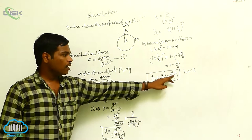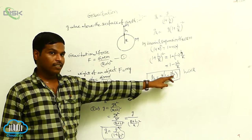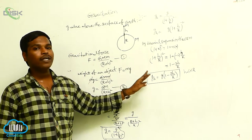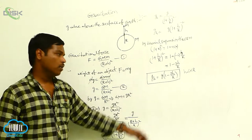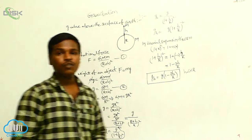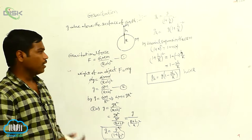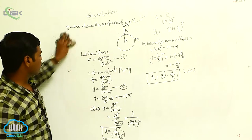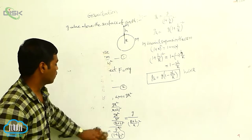As the height increases, the g value decreases. Now, how does this acceleration due to gravity change below the surface of the earth?